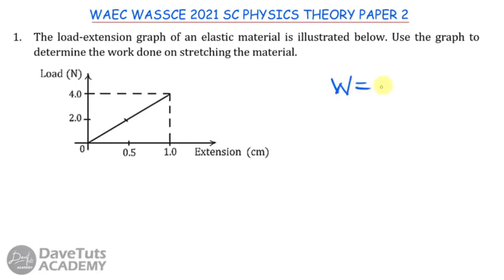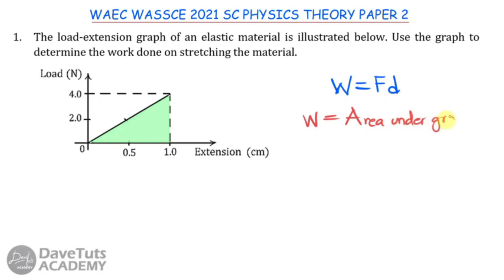We are asked to find the work done on stretching the material. Normally, work is force times distance. However, in this case, we are looking at a graph where the load starts at zero and increases, producing increasing extension. The shaded region of the graph is important here because simply multiplying 4 times 1 would not be right, since the force started from zero.